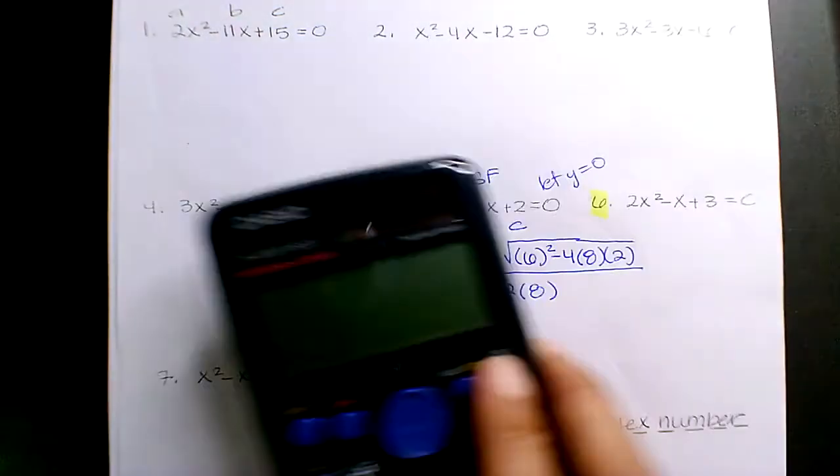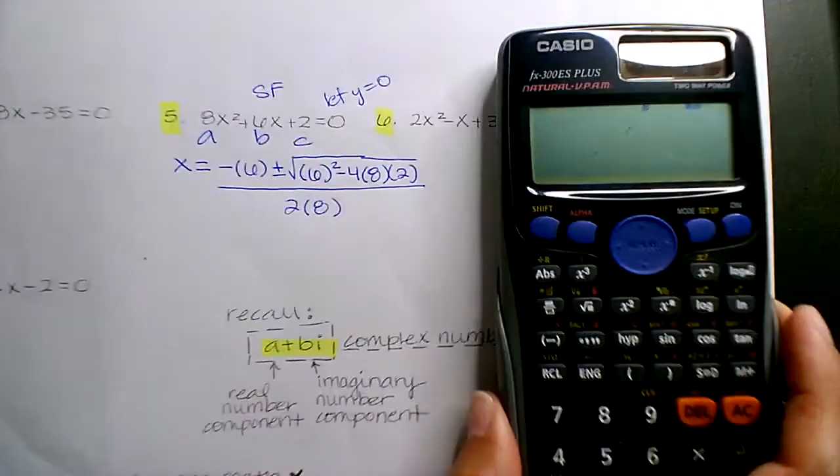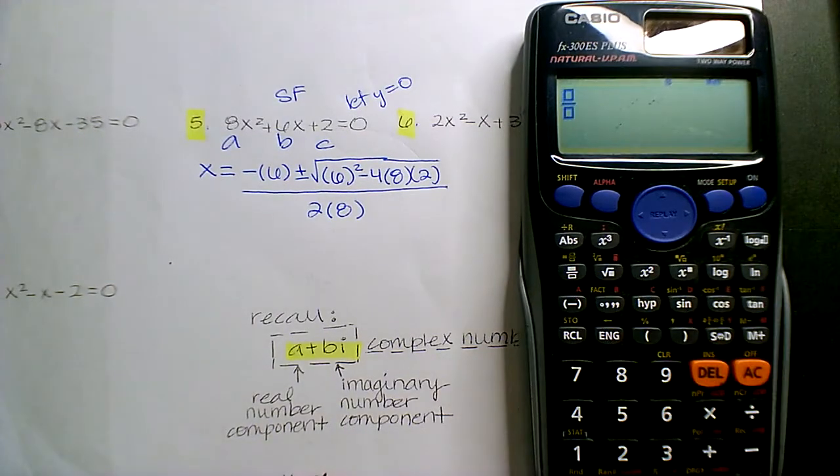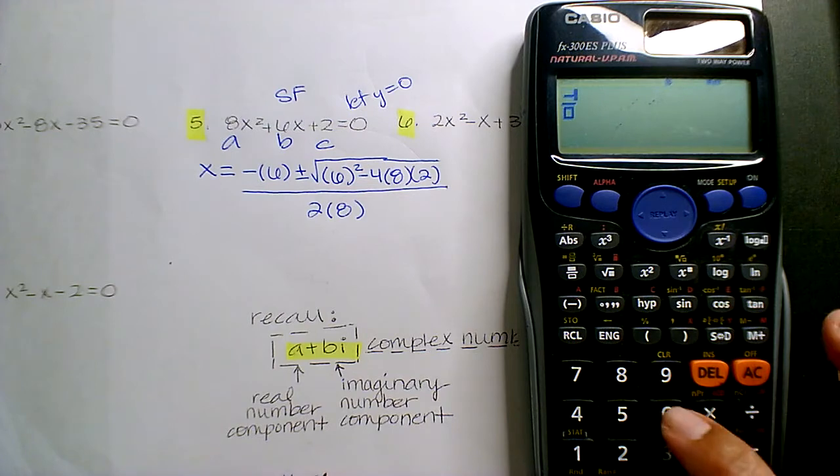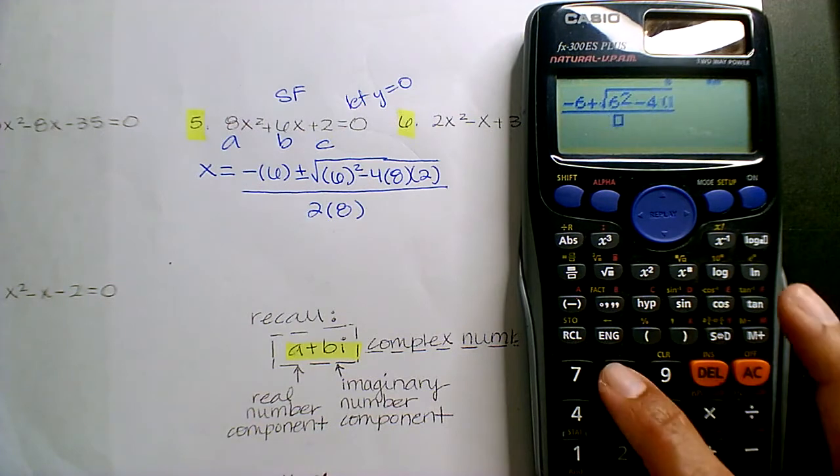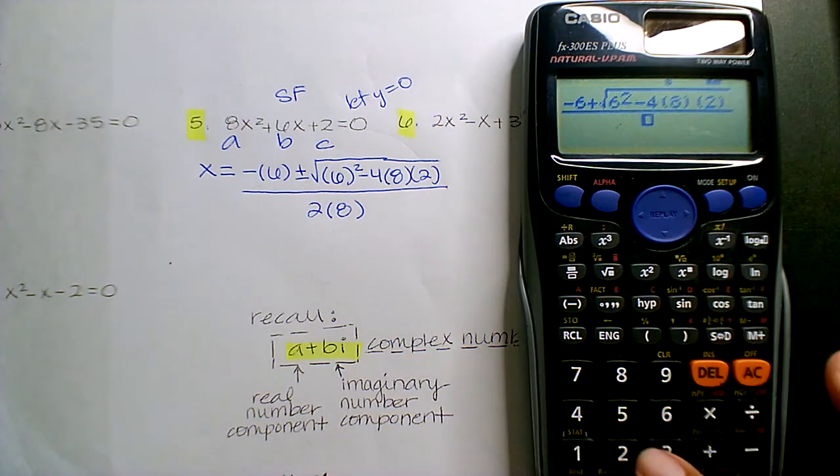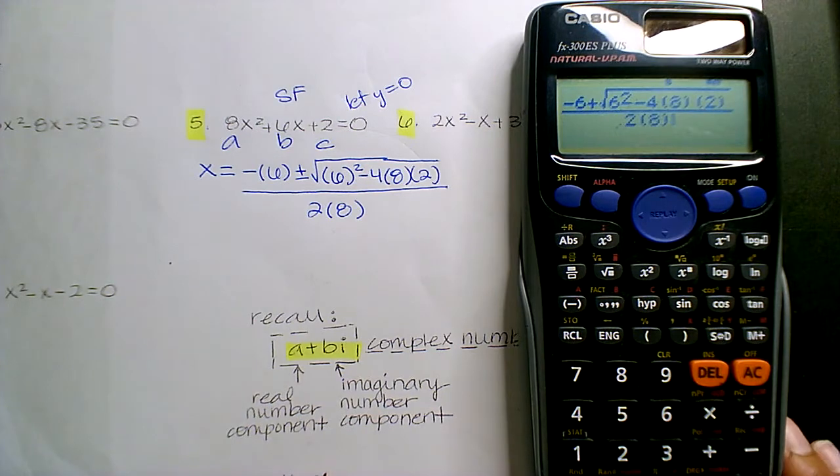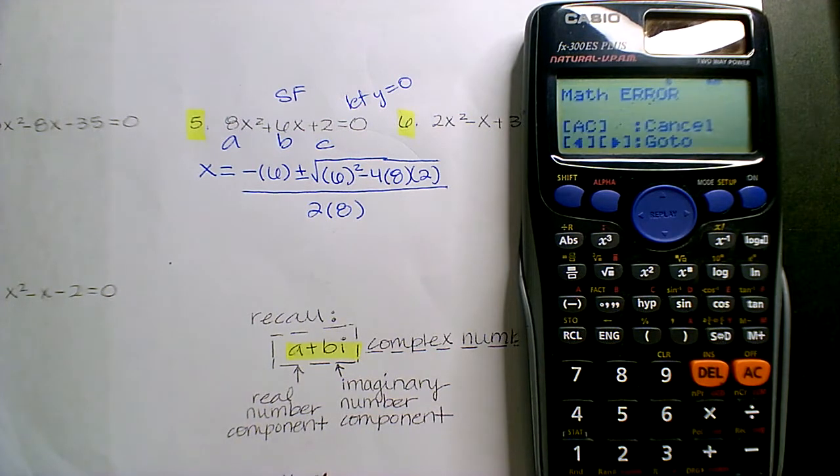If I type this into the calculator, already knowing I'm going to get a rejected fraction: minus 6 plus radical, 6 squared minus 4 times 8 times 2, divided by 2 times 8. I hit equal and I get math error. If you're really confident in your skills, it's probably because you have a negative radical. It's not necessarily that you did anything wrong.